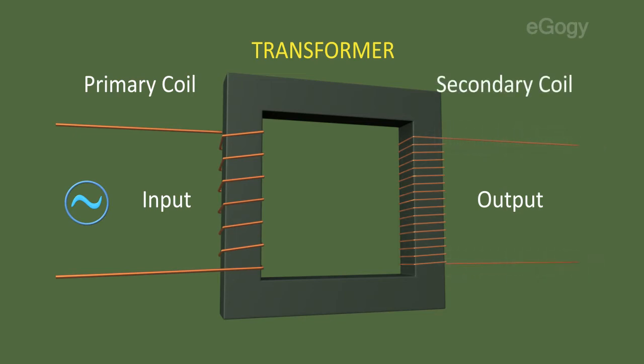Let's see how this input voltage is transferred from primary coil to secondary coil. The transfer of electric energy from one coil to another is carried out by electromagnetic induction.